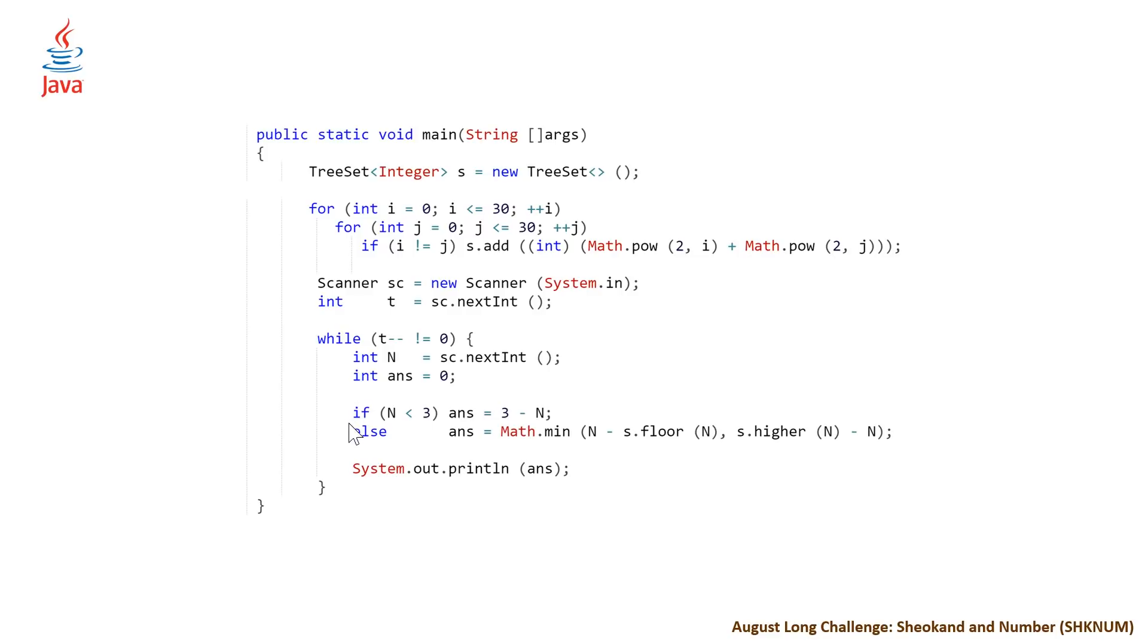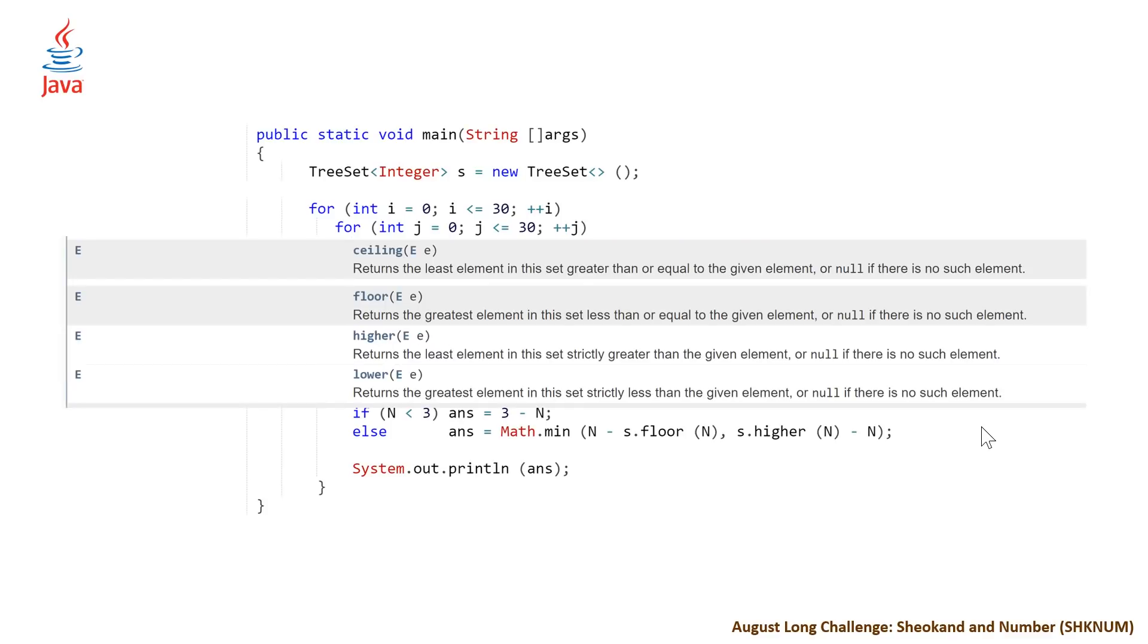We're setting our answer to the minimum of n minus the value to the left or s.higher minus n, which is the value to the right. Note we're making use of two functions, floor and higher. These are from the tree set API. Ceiling and floor go together, and higher and lower go together. The difference is ceiling and floor return elements greater than or equal to or less than or equal to, whereas higher and lower don't consider elements that are equal to. It's strictly greater than or strictly less than.